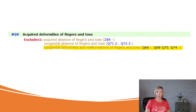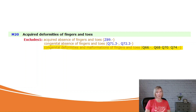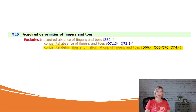Lastly, an exception to the EXCLUDES-1 definition is when the two conditions are clearly unrelated. For example, say a patient has a congenital deformity in their toes but comes in with an acquired deformity in their finger — those conditions are clearly unrelated. In this case, category M20, which covers acquired deformities of the fingers and toes, has an EXCLUDES-1 note for congenital deformities and malformations of the fingers and toes. However, since the conditions are clearly unrelated, we can disregard the EXCLUDES-1 note and assign the codes for both conditions.